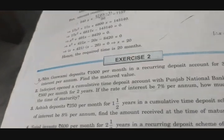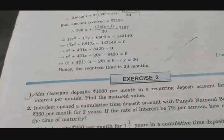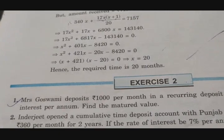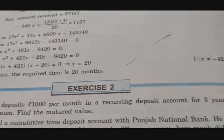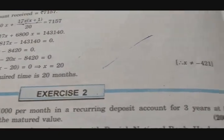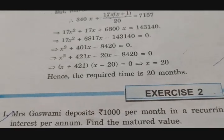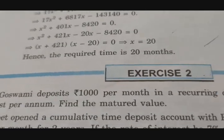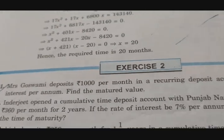Exercise 2, first sum is this one: Mrs. Goswami deposits 1000 rupees per month in a recurring deposit account for 3 years at 8% interest per annum. Find the maturity value.